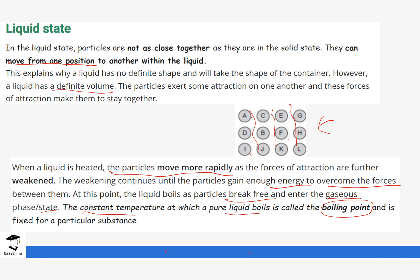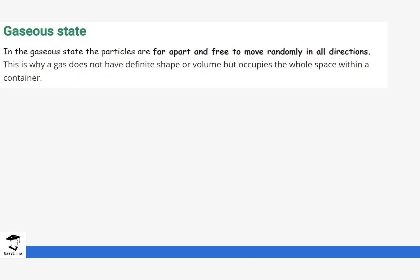Now we move to the gaseous state and look at how the particles look in this state. For the gaseous state, the particles are further apart — they are not only apart but they are also free to move in all directions. Gases do not have a definite shape or volume but they occupy the whole space within a container. There are no forces between gas particles; you can see the spaces are larger in comparison to the spaces of solid particles.